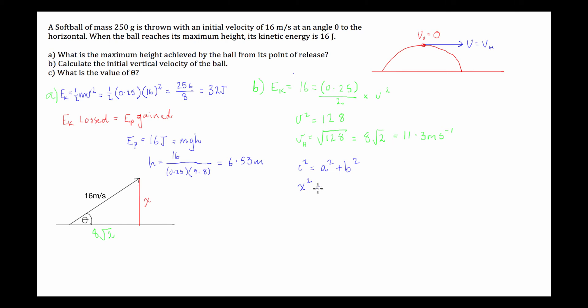x squared is going to equal 16 squared minus 8 square root 2 squared. Now, 16 squared, we said that before was 256, 8 root 2 squared, well, root 2 squared is 2, 8 squared is 64, 2 times 64 is 128. So, x squared is 256 minus 128, which is equal to 128.